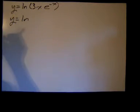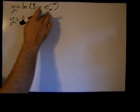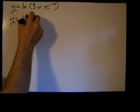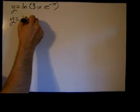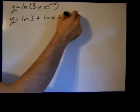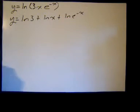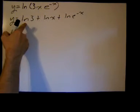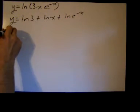Actually, you know what, I'm going to break up all three products because I don't even want that 3 there. So I have the natural log of 3 plus the natural log of x plus the natural log of e to the negative x. I'm going to leave it there for a second.